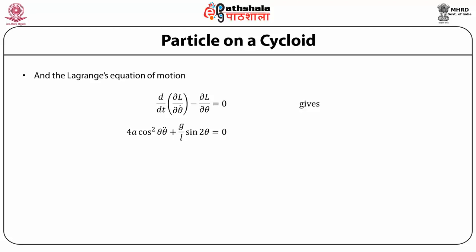The kinetic energy is T = ½m(ds/dt)² = 8ma² cos²θ · θ̇². The potential energy is U = mga(1 − cos2θ), and therefore the Lagrangian is L = 8ma² cos²θ · θ̇² − mga(1 − cos2θ). Applying the Lagrangian equation d/dt(∂L/∂θ̇) − ∂L/∂θ = 0, the equation of motion becomes 4a cos²θ · θ̈ + (g/l) sin2θ = 0. For small oscillations, cosθ ≈ 1 and sinθ ≈ θ, reducing this to 2aθ̈ = −2gθ, which is the harmonic oscillator equation with frequency ω = √(g/2a).